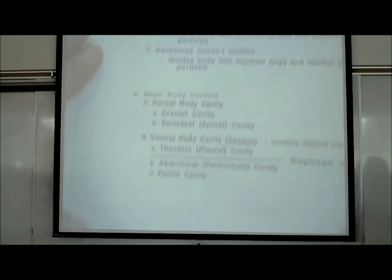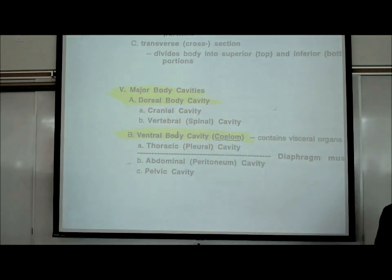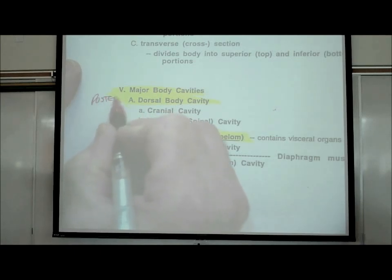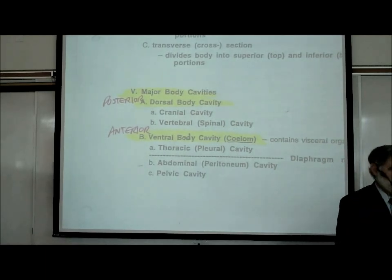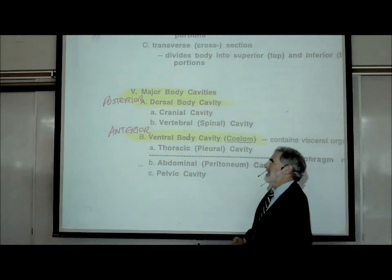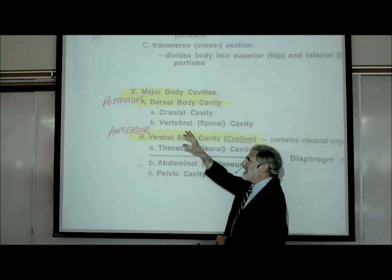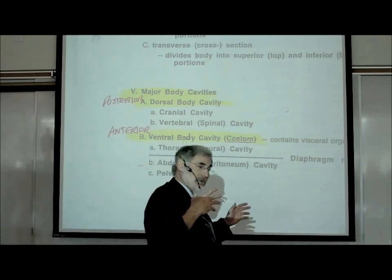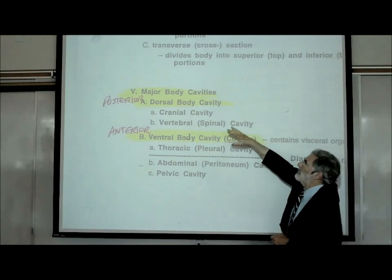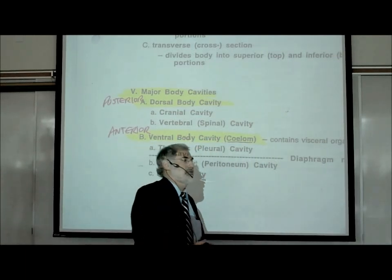Let's look at major body cavities. There are two major cavities: a dorsal body cavity and a ventral body cavity. Synonyms: dorsal means posterior, ventral means anterior. The dorsal body cavity is subdivided into a cranial and a vertebral portion. The cranial portion contains the brain; the vertebral or spinal portion of the dorsal body cavity contains the spinal cord.